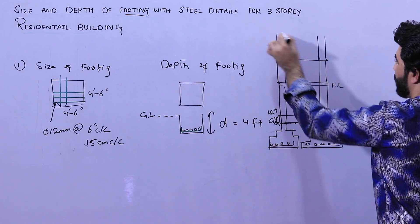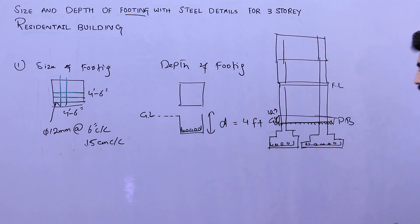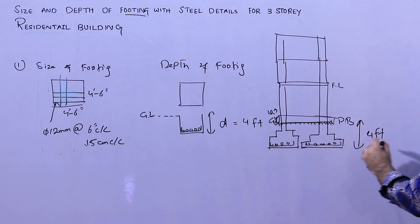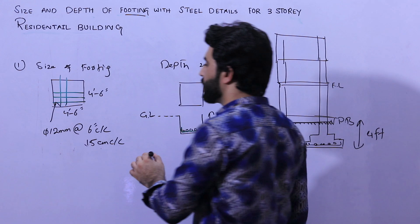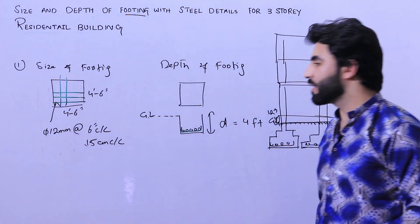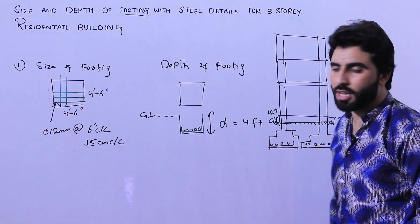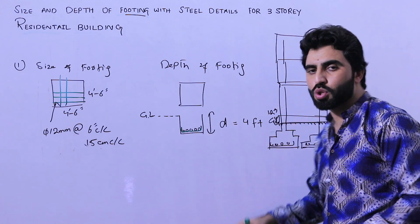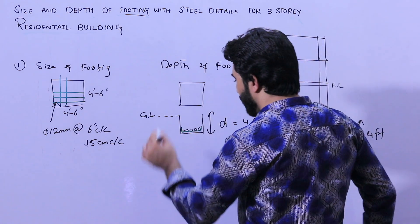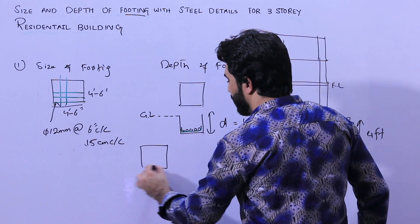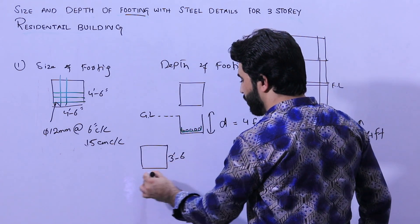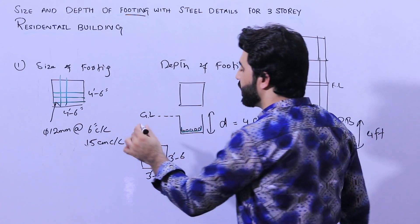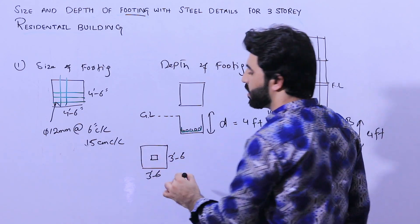Up to three stories, the depth of footing should not be less than four feet and the size should not be less than four feet six inches by four feet six inches. If you want to build a two-story house, three feet six inches by three feet six inches is enough, and inside you can provide the RCC column.